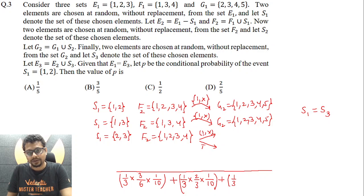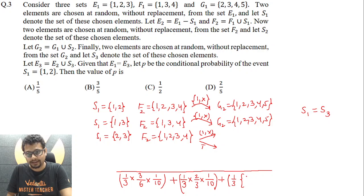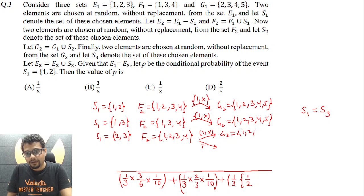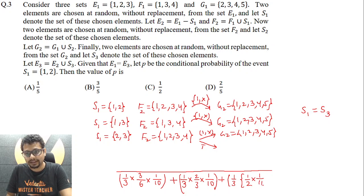Sub-case A: 1 is selected in S2, and the second element can be any of the other three. Probability = 3/4C2 = 3/6 = 1/2. G2 becomes {1,2,3,4,5}. For S3 to be {2,3}, favorable = 1, total = 5C2 = 10.